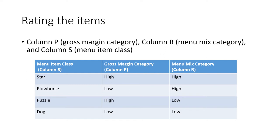Now I'm going to talk about rating the items on my menu. We will be using column P, the gross margin category, column R, the menu mix category, and column S, the menu item class. The menu item class includes star, plow horse, puzzle, and dog.